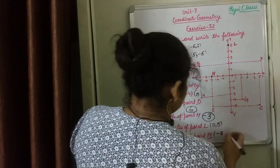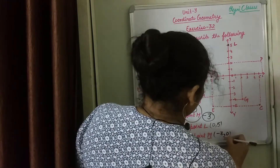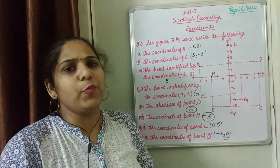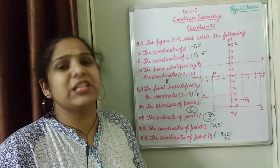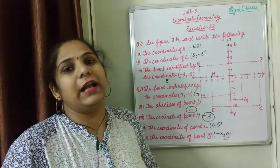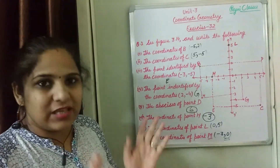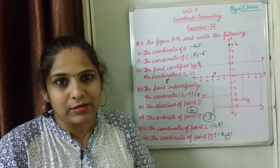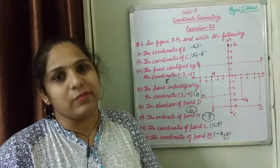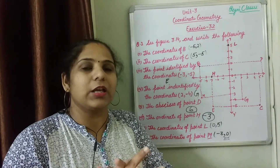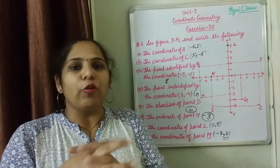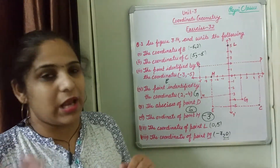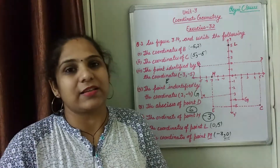And this completes Exercise 3.2. I hope you understand it well. This is the easiest exercise. I hope you have done it well. If you have the basics clear, you can do this exercise. But I explained it because sometimes we have doubts, so I tried to clear all the questions and topics of this exercise.